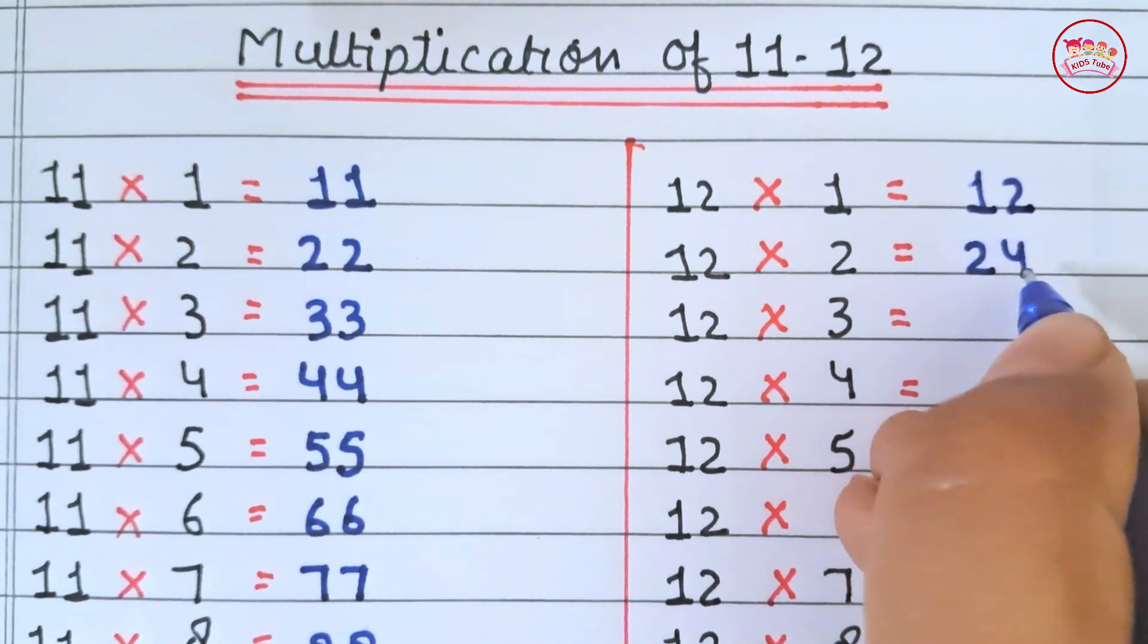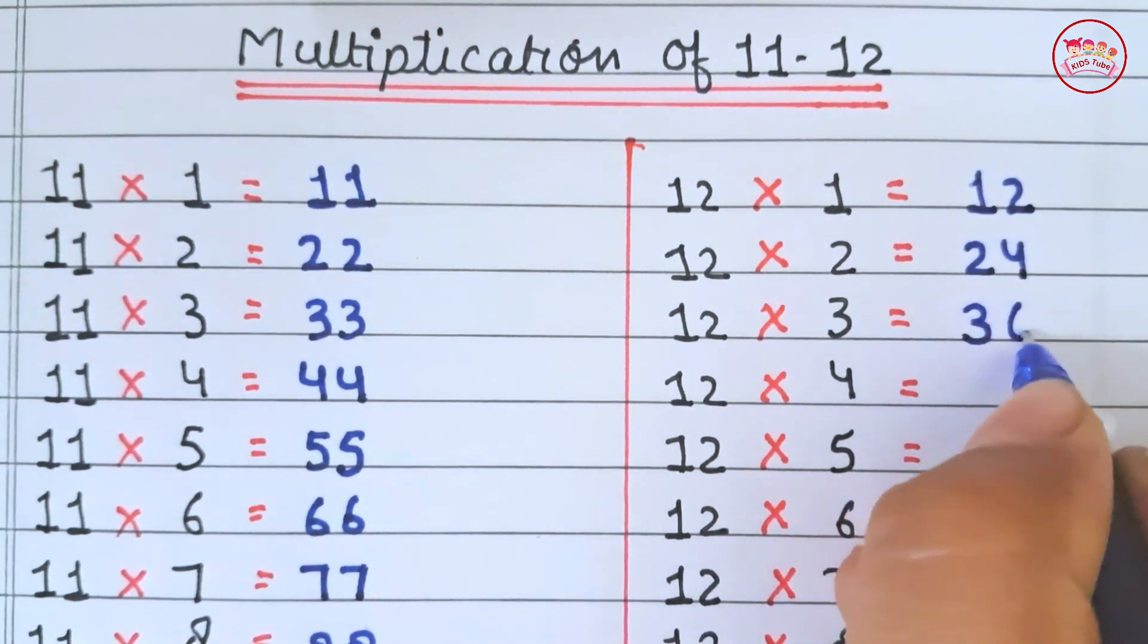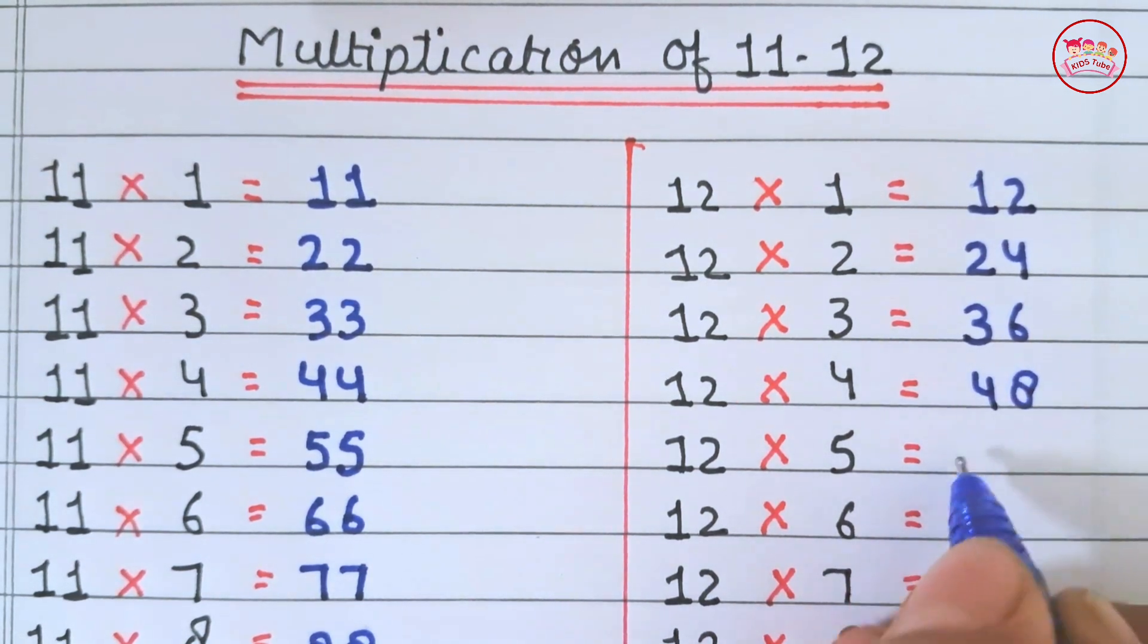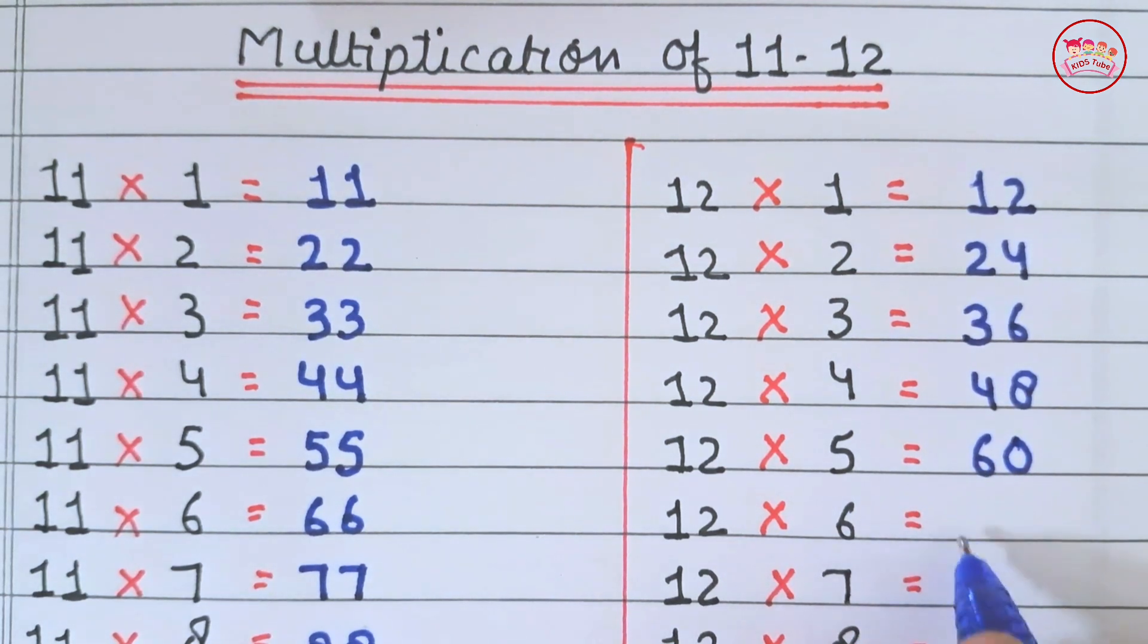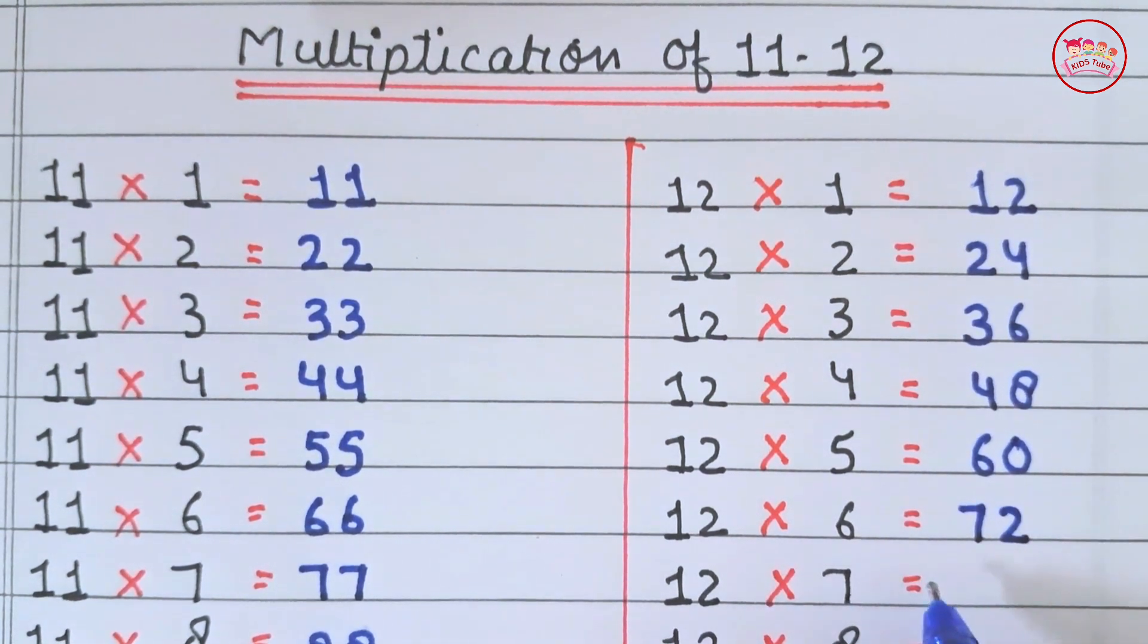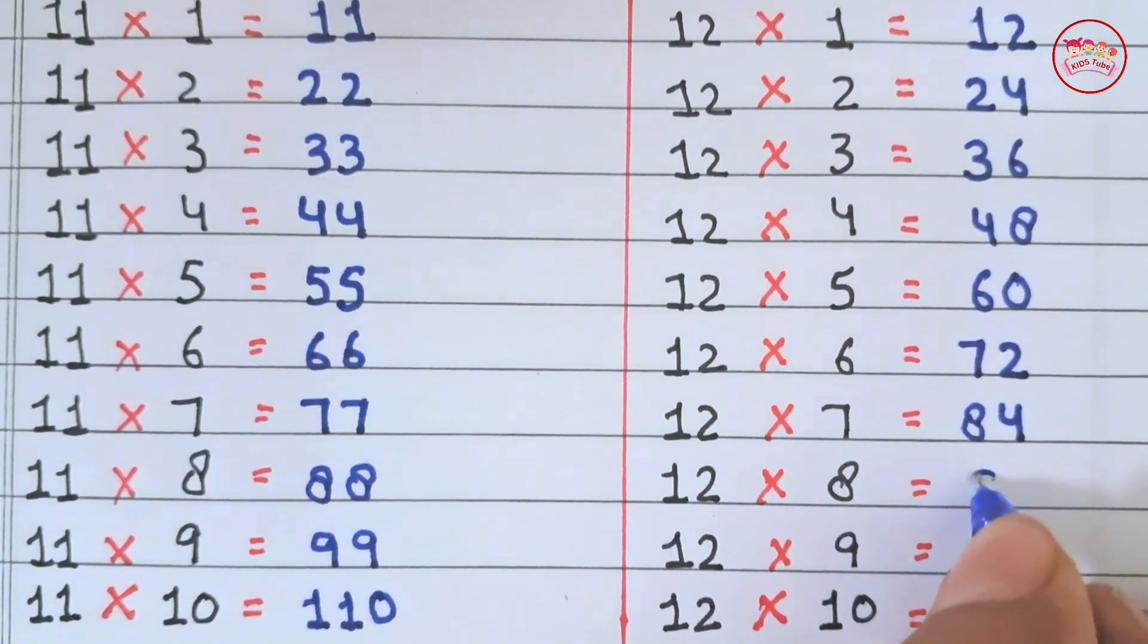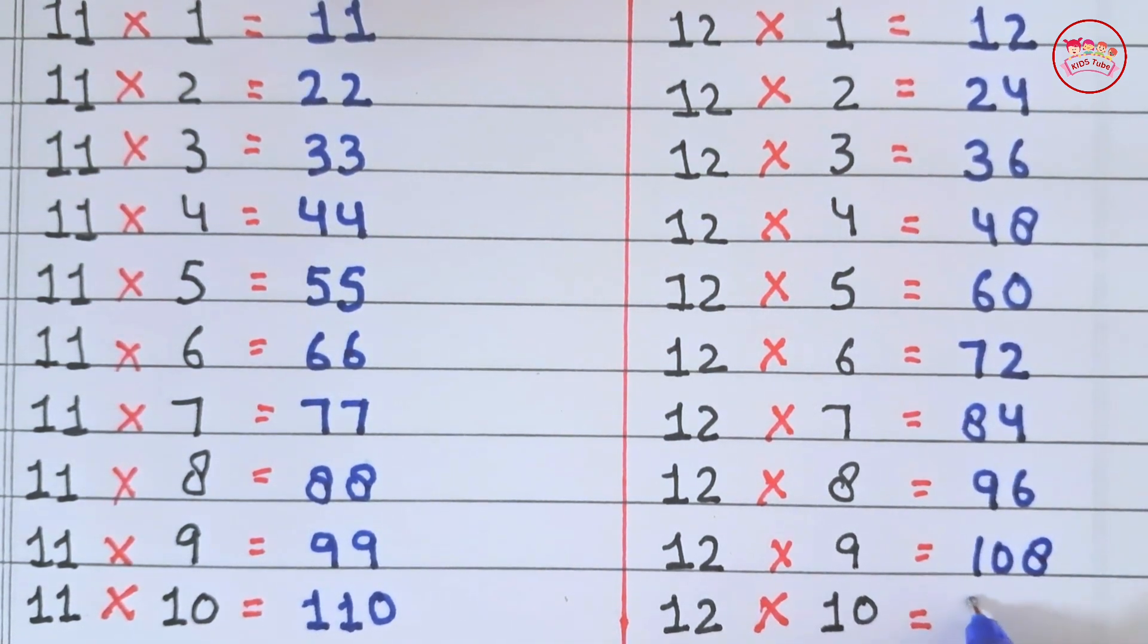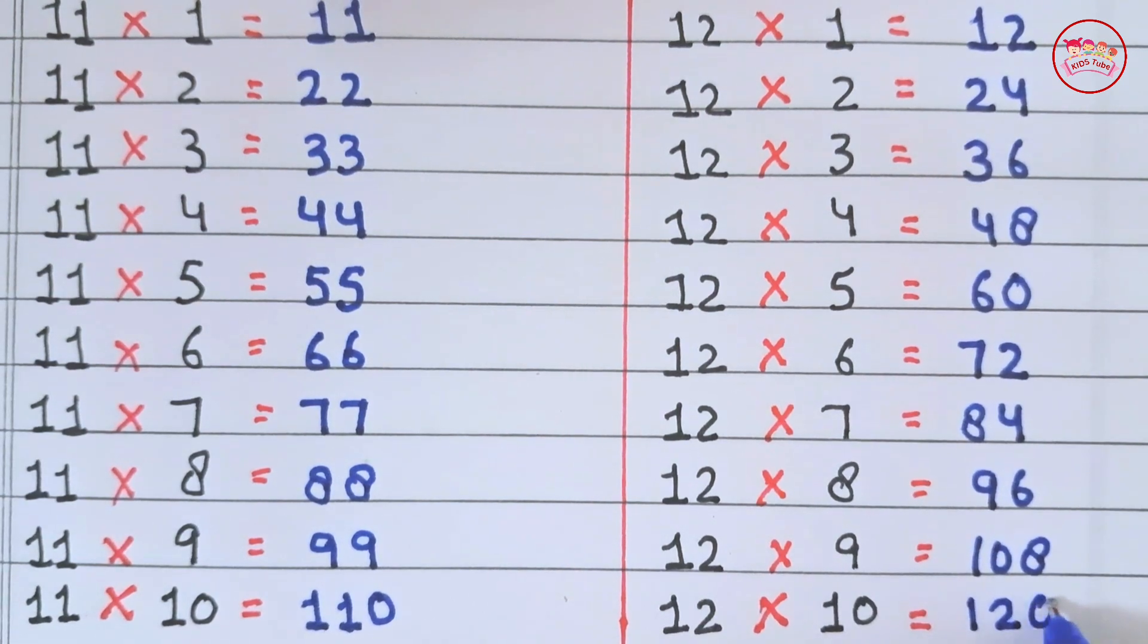24, 12×3 is 36, 12×4 is 48, 12×5 is 60, 12×6 is 72, 12×7 is 84, 12×8 is 96, 12×9 is 108, 12×10 is 120.